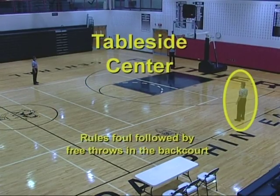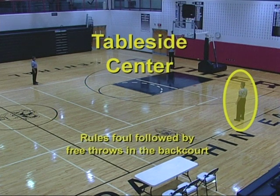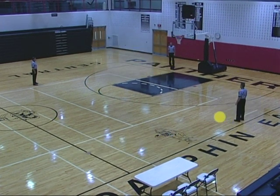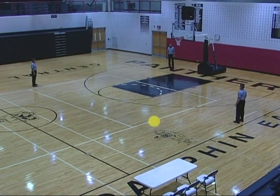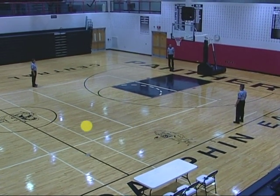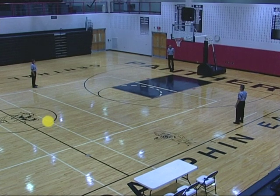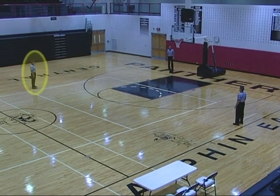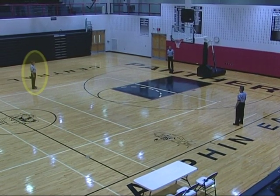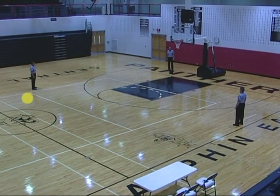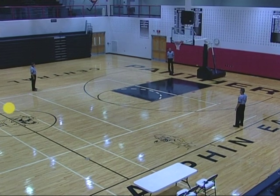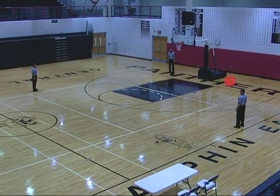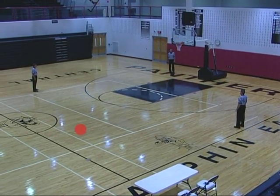Tableside center rules foul, followed by free throws in the backcourt. Proceeds to the reporting area and reports the foul. Becomes the opposite side center. Opposite side trail becomes tableside lead and handles the free throw. Opposite side lead becomes tableside trail.